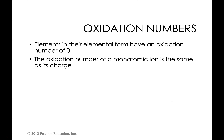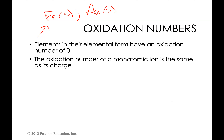First: elements in their elemental form, meaning not charged, have an oxidation number of zero. For example, if something has no charge and is not attached to anything, it has an oxidation number of zero. Diatomic elements like oxygen or chlorine with no charge also have oxidation number zero. The oxidation number of a monatomic ion is the same as its charge.